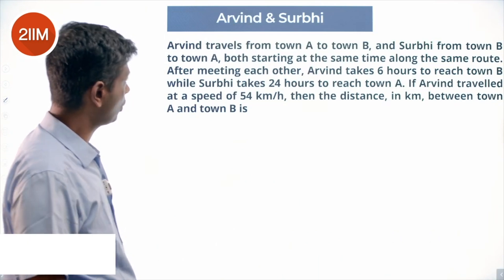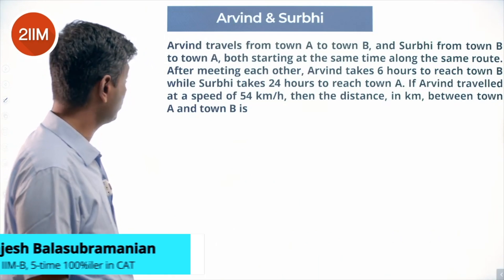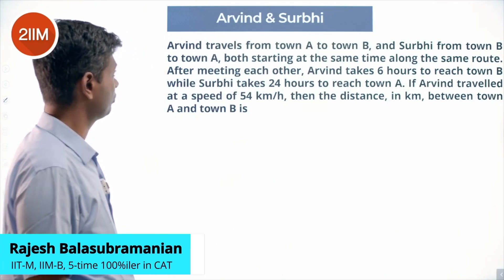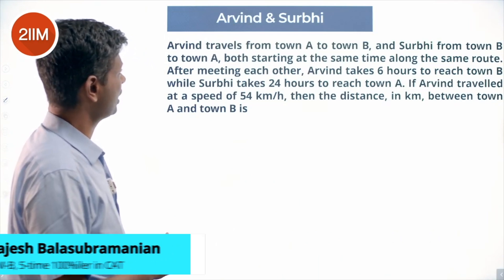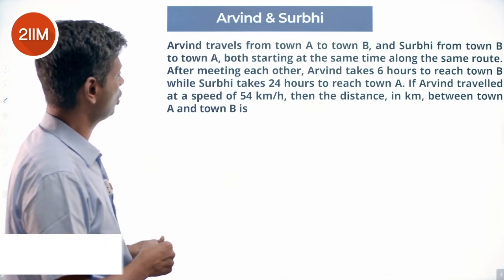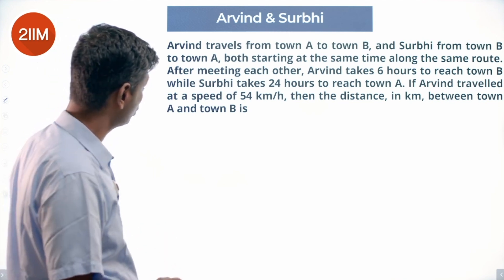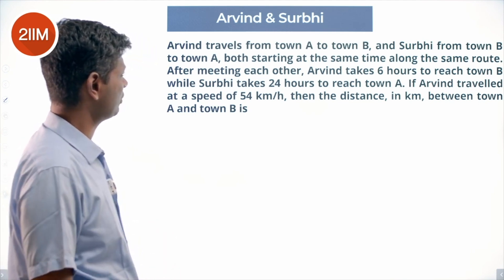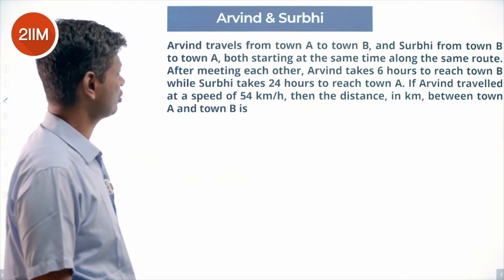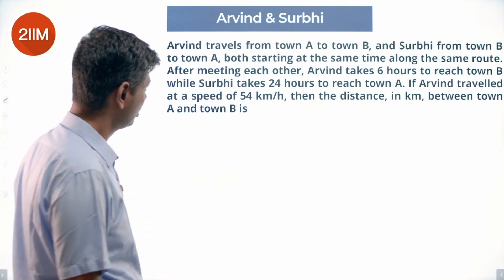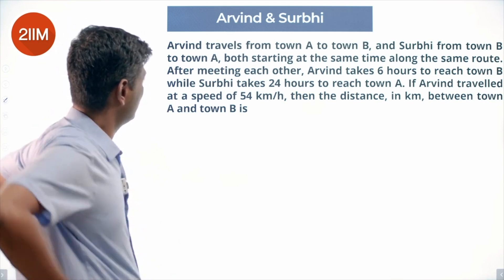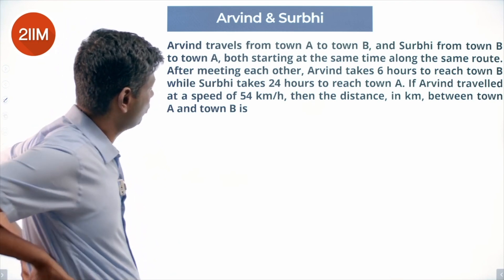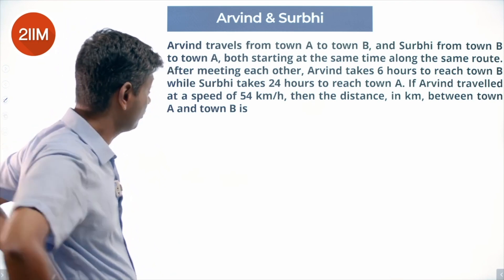Arvind travels from town A to town B, Surbhi from town B to town A, both starting at the same time along the same route. After meeting each other, Arvind takes 6 hours to reach town B, while Surbhi takes 24 hours to reach town A.